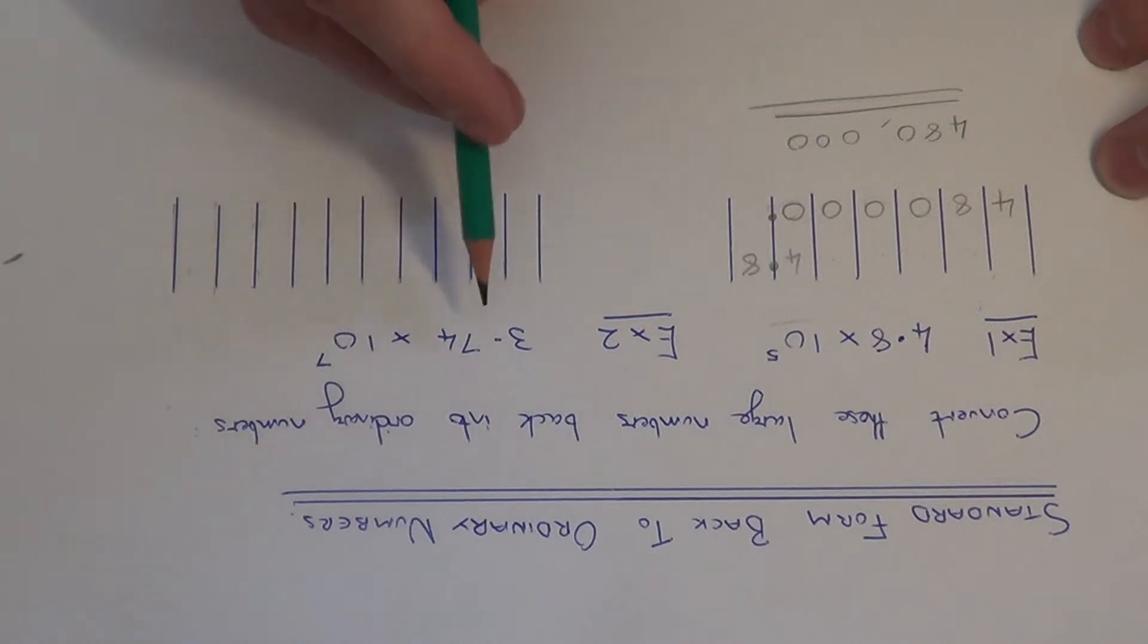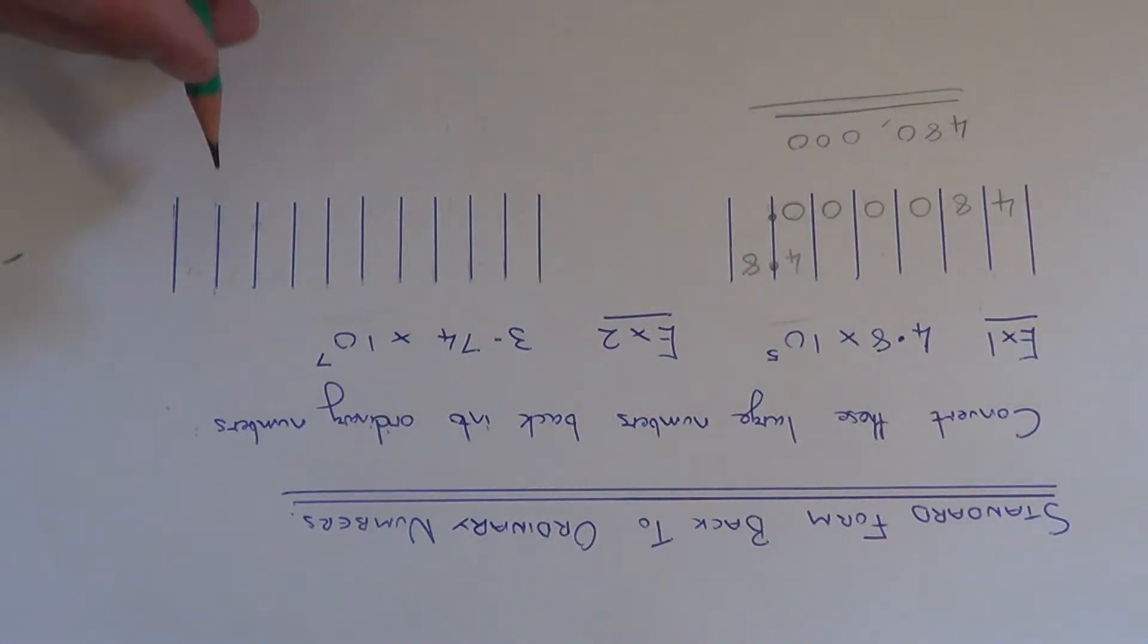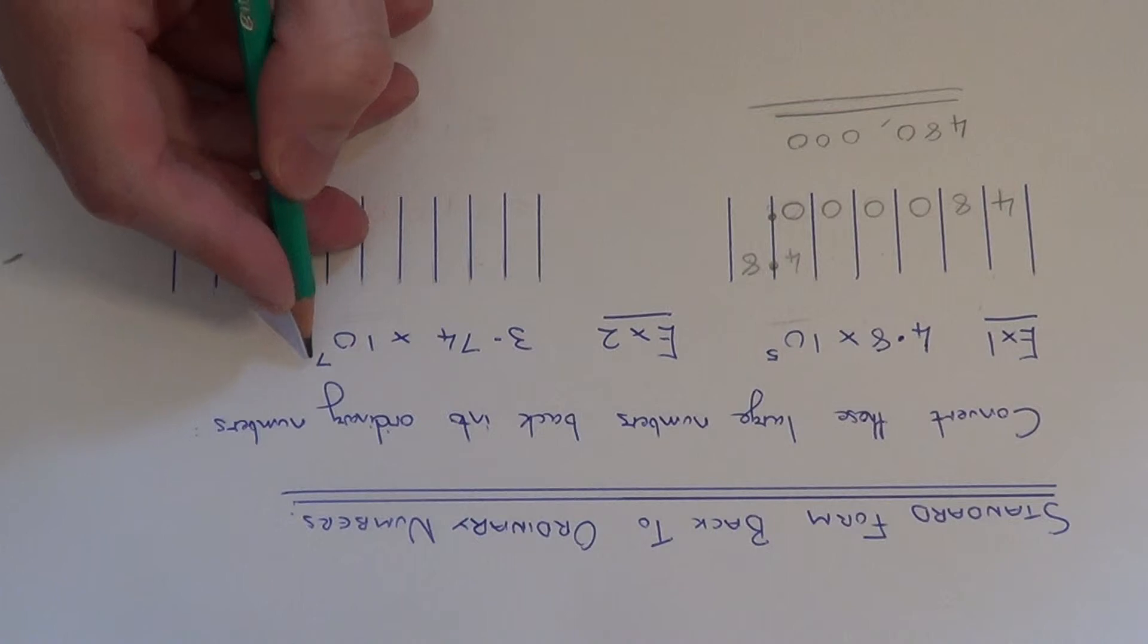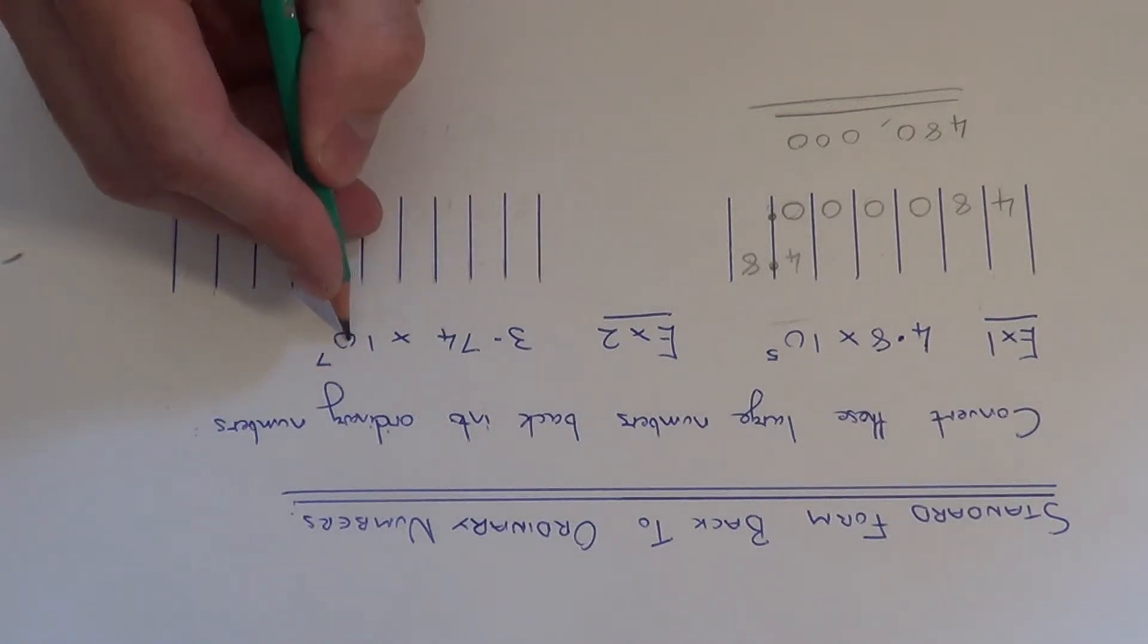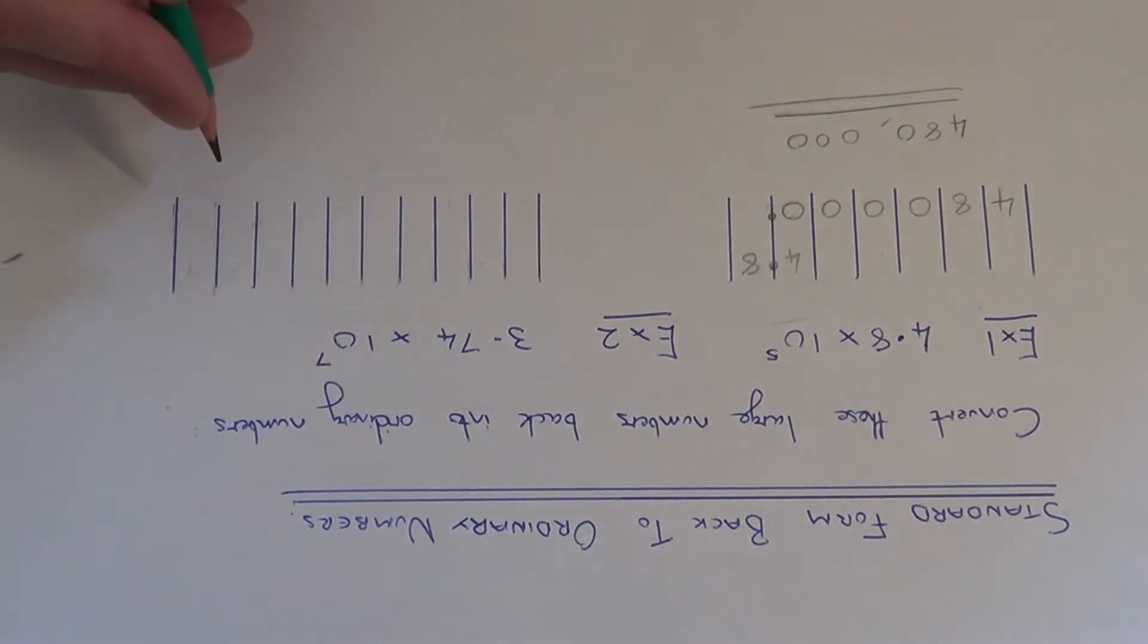So let's move on to example 2. We've got 3.74 times 10 to the power of 7, so we need to convert that to an ordinary number. This time we need to multiply 3.74 by 10 and do this 7 times. So we need to move the digits 7 places to the left.